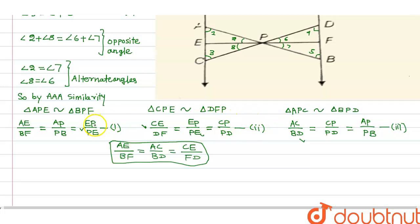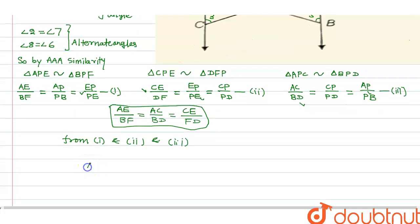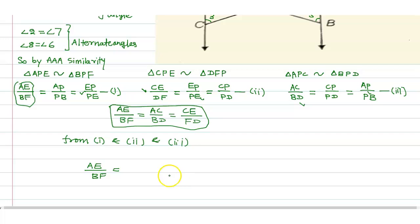From equation one, equation two, and equation three, we can say AE upon BF is equal to AC upon BD, and is also equal to CE upon DF. Hence proved. Thank you.